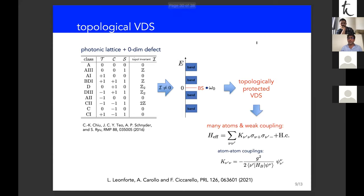Based on these VDS you can write an effective atom-atom Hamiltonian, and work out the general form of atom-atom couplings inherited from the photonic wave function shape. This yields classes of atom-atom Hamiltonians that are topologically protected. One can also ask the converse: if you have a topologically protected atom-photon dressed state, is it a VDS? The answer is yes, provable by symmetry arguments. So VDS is the natural class to consider when dealing with topologically protected atom-photon dressed states.